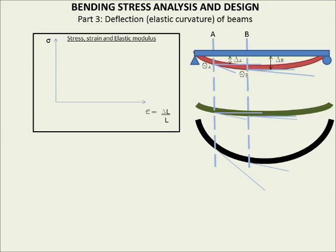We have our stress on the vertical axis and strain — a measure of deformation — on the horizontal axis. In the elastic range we have a linear relationship between stress and strain, represented here by the green line. The purple part of the line represents when we go past the elastic range and there's no longer a linear relationship between stress and strain. Stress divided by strain gives you the elastic modulus, which is the slope of the line, and we have these slopes for steel, concrete, carbon, and different materials.